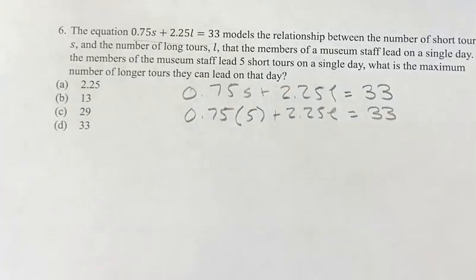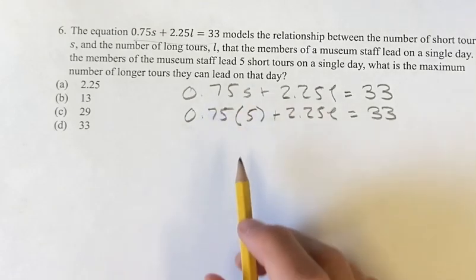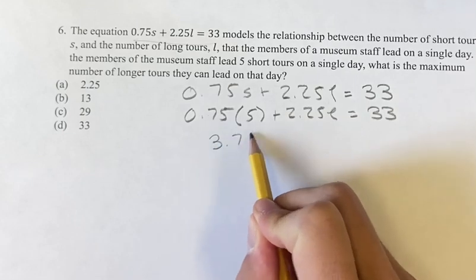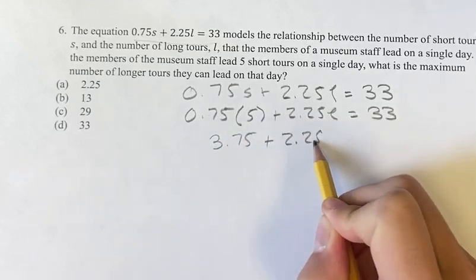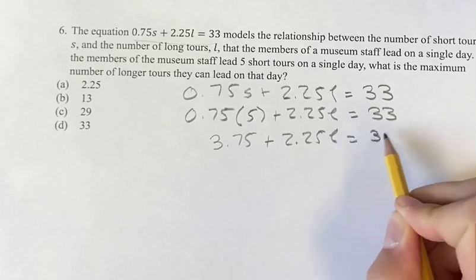And so this is going to solve for l, and that's going to be the number of longer tours that they would be able to lead on that day. So 0.75 times 5 is going to be 3.75, plus 2.25l is equal to 33.